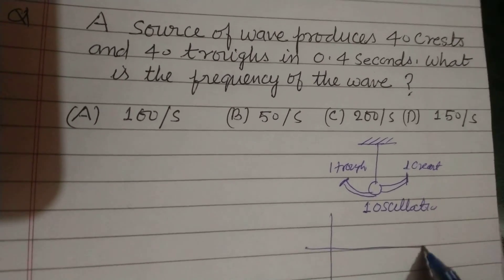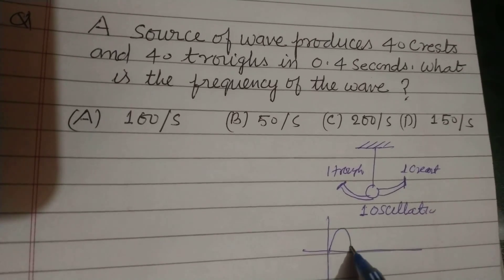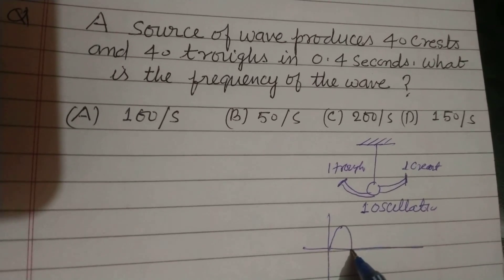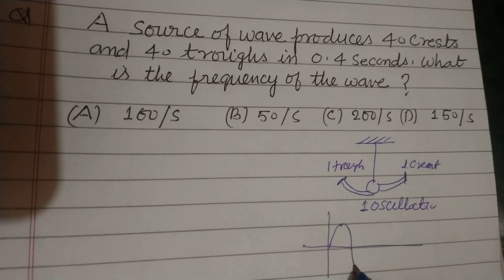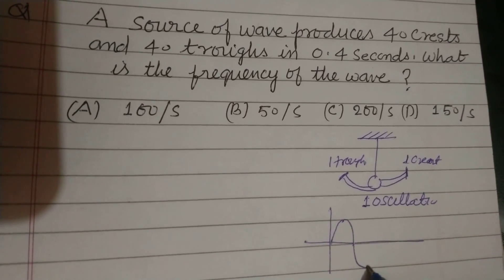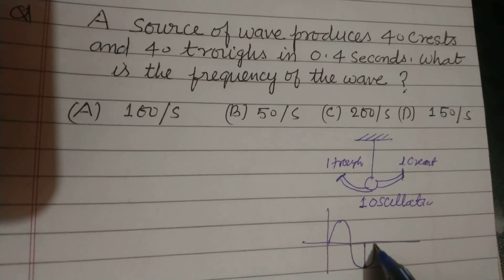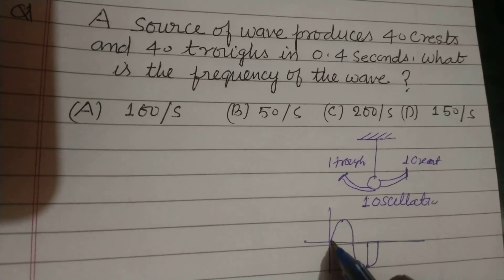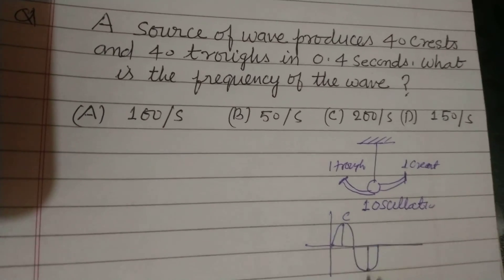And the graph of this is, here this is crest and now come to mean position. And again go in other direction, it is a trough and come to its mean position. So this is crest and this is trough.